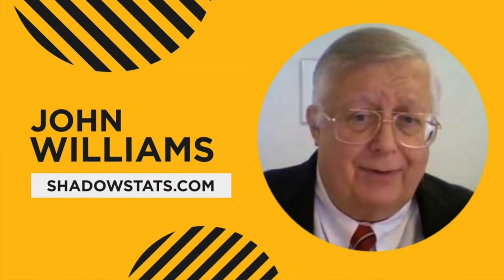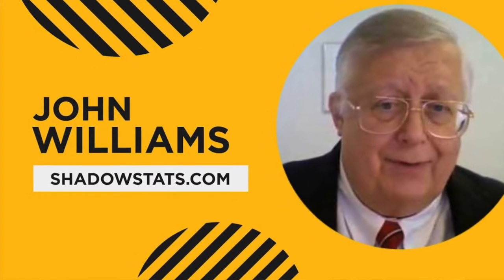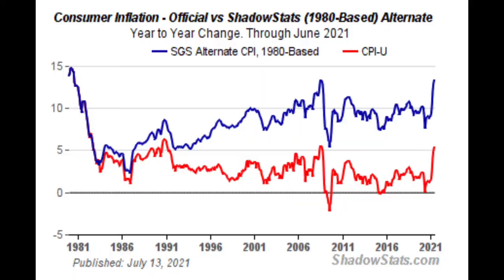There is actually an interesting website called Shadow Government Statistics — www.shadowstats.com — that reports the CPI numbers without the modifications made by the government. A chart from their website shows an estimate of inflation for today as if it were calculated the same way it was in the 1980s. In the chart, the blue line labeled SGS Alternate CPI reflects the CPI calculated using 1980s methodologies, while the red line labeled CPI-U represents the official CPI numbers reported by the government. As you can see, the real inflation rate is almost twice the officially reported inflation rate.